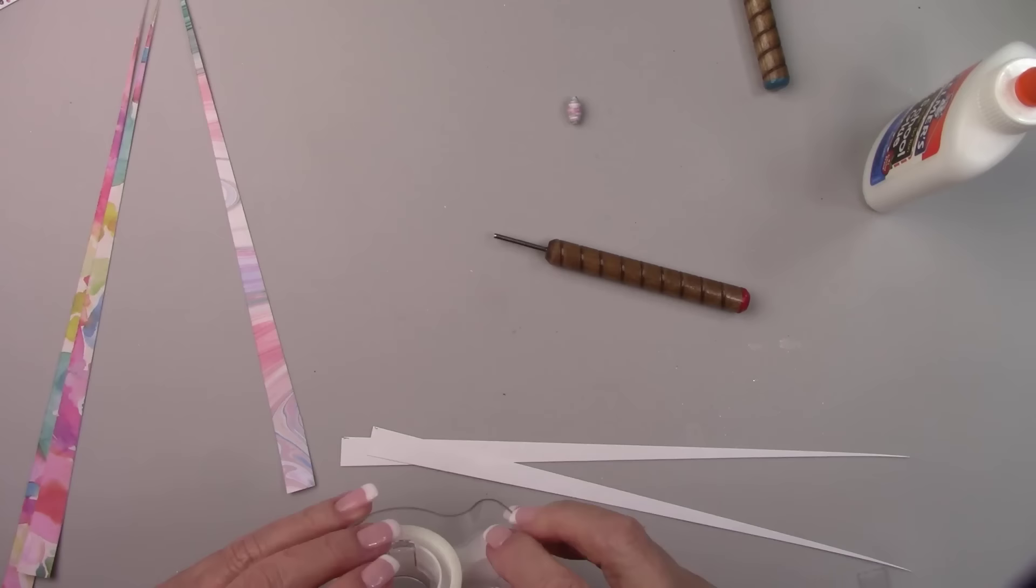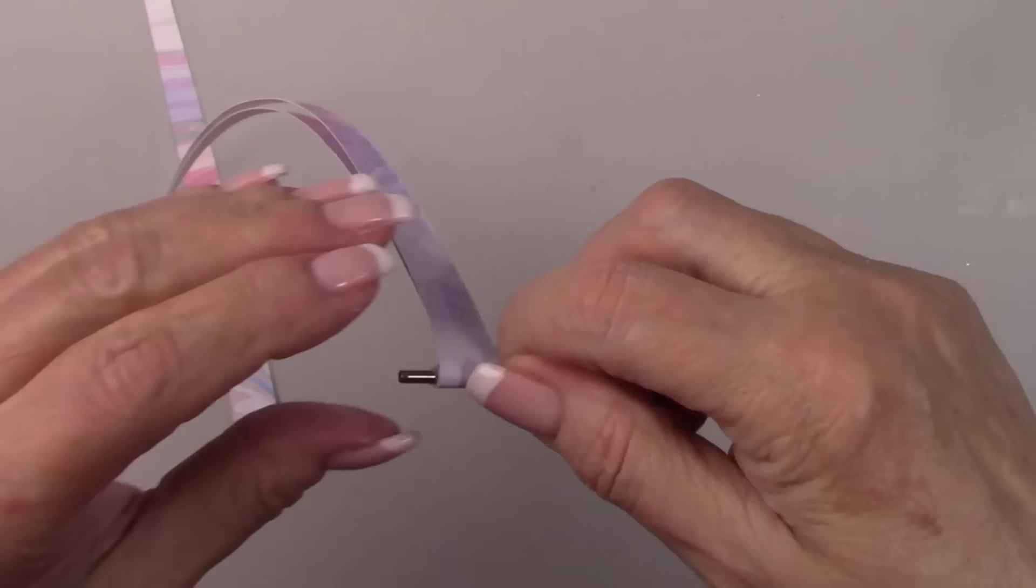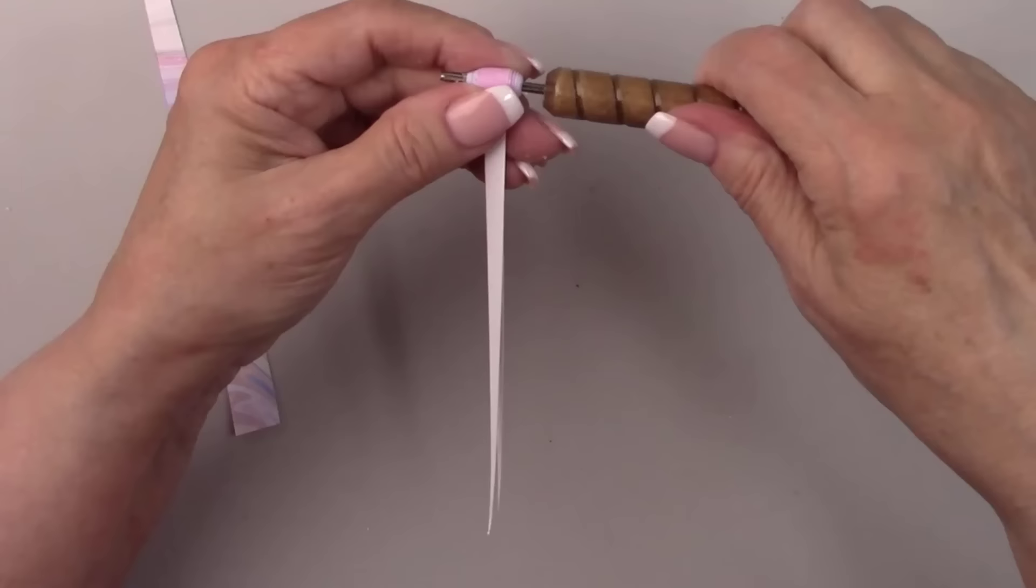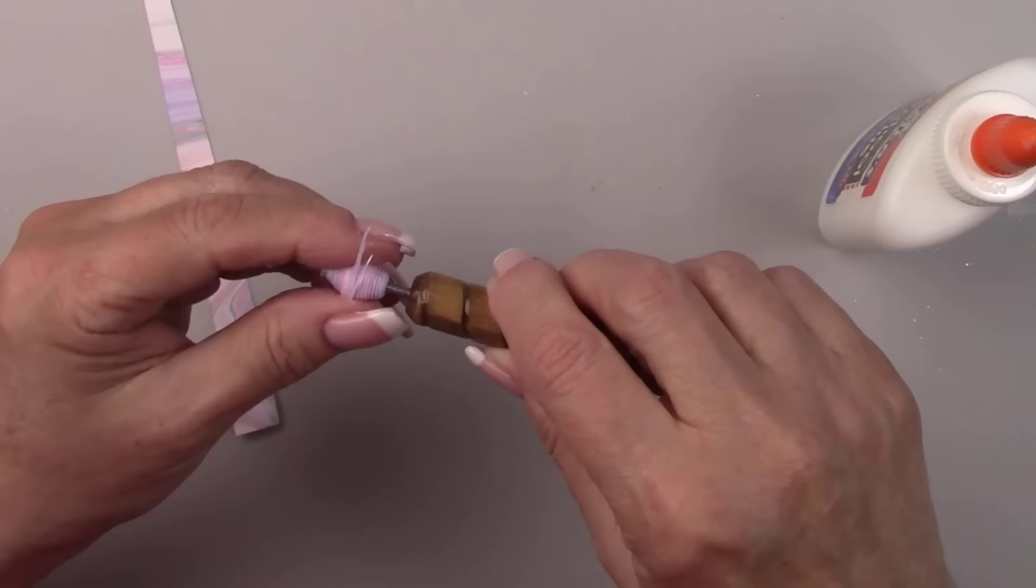If you want to make a fatter bead, you'll tape two pieces of the paper together. One piece about a quarter of an inch lower. And then start rolling. When you get to the end, you'll need to glue down both ends. See how much fatter this bead is?